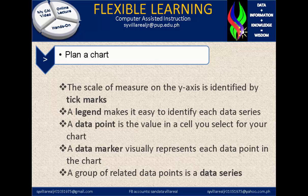A legend makes it easy to identify each data series. A data point is the value in a cell you select for your chart — meaning the data you have selected is what will appear on the chart. A data marker visually represents each data point in the chart. The last element is a data series, which is a group of related data points.